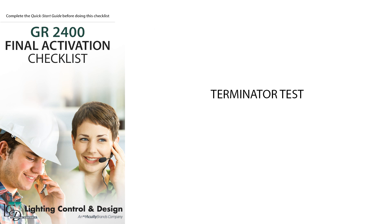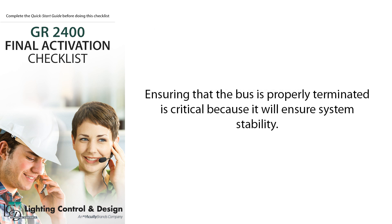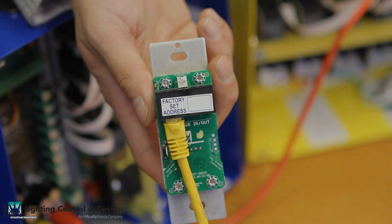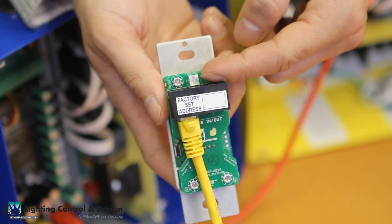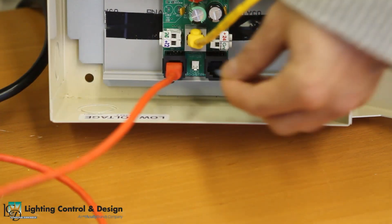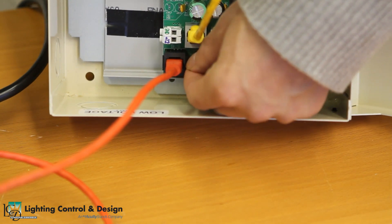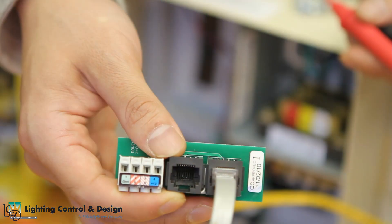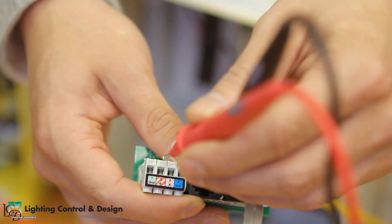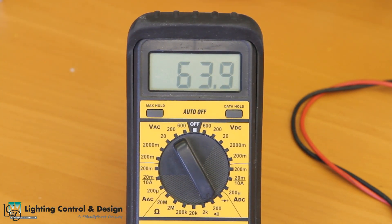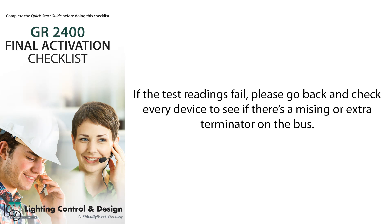After all three tests have passed, the very last test is the terminator test. Ensuring that the bus is properly terminated is critical because it will ensure system stability. Every device will have a two-pin terminal where the terminator can be plugged in. Only the first and last device should be terminated. Once the bus has been terminated properly, measure resistance across A and B. This reading should be between 60 to 90 ohms. If the test readings fail, please go back and check every device for a missing or extra terminator on the bus.